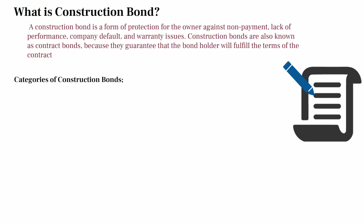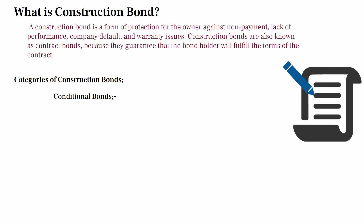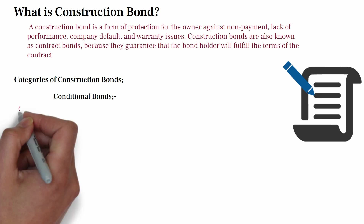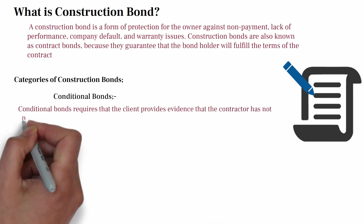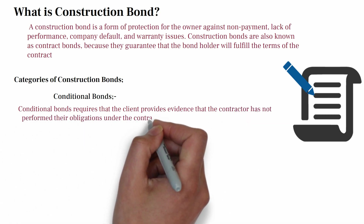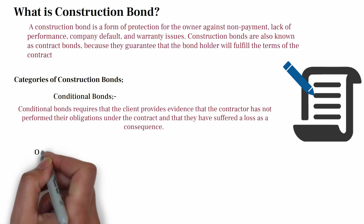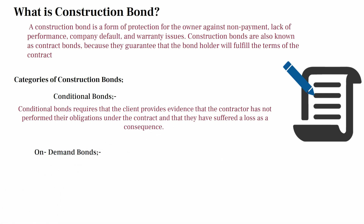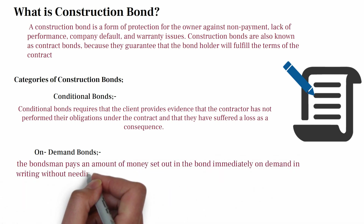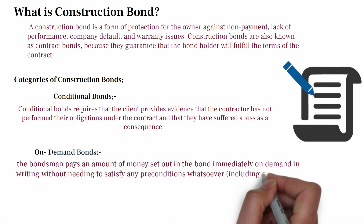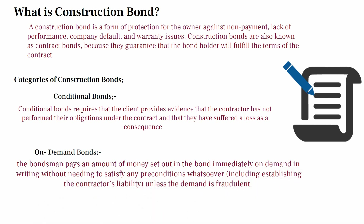Categories of construction bond — there are two: conditional bond and on-demand bond. A conditional bond is a secondary obligation which requires that the client provide evidence that the contractor has not performed the obligation under the contract and that they have suffered a loss as a consequence. An on-demand bond, which is a primary obligation, means the surety pays an amount of money set out in the bond immediately on demand in writing, without needing to satisfy any precondition whatsoever, unless the demand is fraudulent.